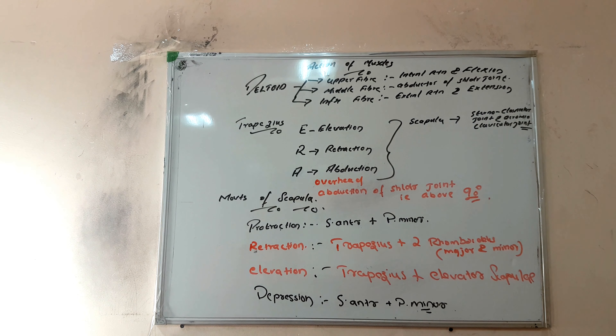Retraction function and elevation: retraction is done by trapezius as well as two rhomboid muscles - rhomboids major and minor. You remember the muscles connecting the vertebral column - the two rhomboids, major and minor, assist in retraction.